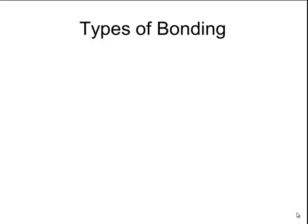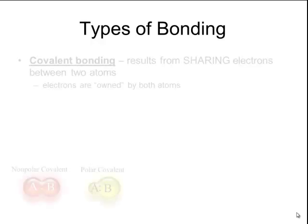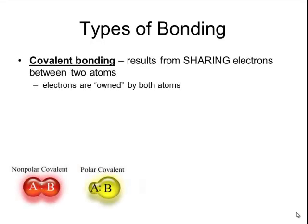We have learned a lot about elements on the periodic table and the properties of those elements, and now we're going to begin to learn how those elements combine to make compounds containing different types of bonds. There are three major types of bonding that occurs in chemical compounds. The first is called covalent bonding, and this results from a sharing of electrons between two atoms.